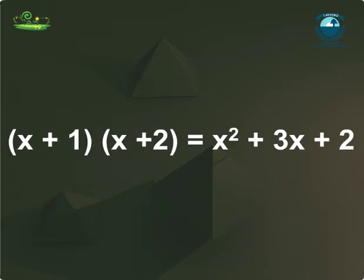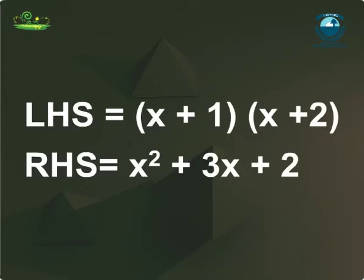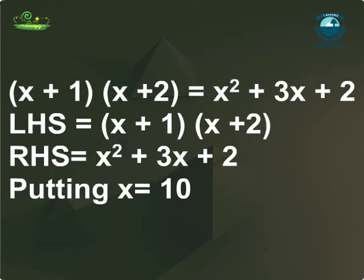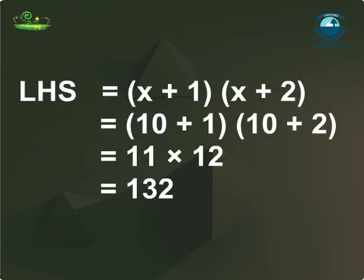Consider the equality (x+1)(x+2) = x²+3x+2. The LHS, that is left-hand side, is x+1 into x+2, and the RHS, that is right-hand side, is x²+3x+2. On evaluating both sides for x=10, we get LHS = (10+1)(10+2) = 11×12 = 132.